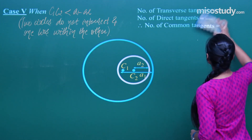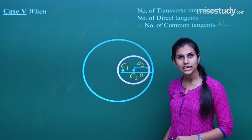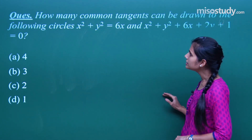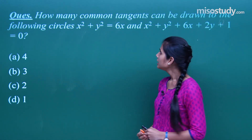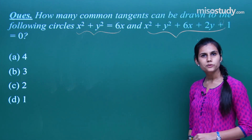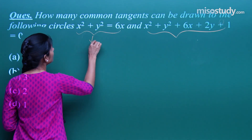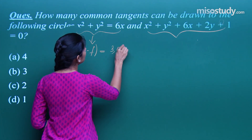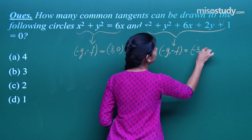Now that we've understood the several positions based on the distance-between-centres and radii relationship, let's check out a particular question: how many common tangents can be drawn to the following circles — x² + y² = 6x and x² + y² + 6x + 2y + 1 = 0? Comparing with the standard form x² + y² + 2gx + 2fy + c = 0, the centre of the first circle is (3, 0) and the centre of the second is (−3, −1).